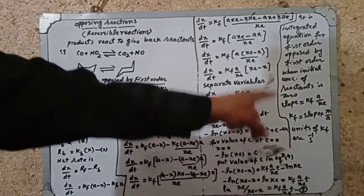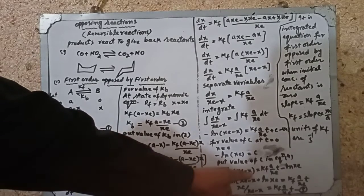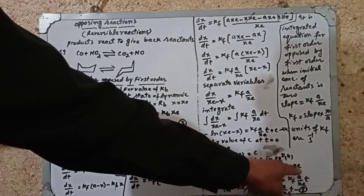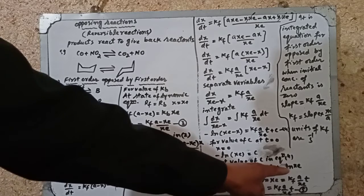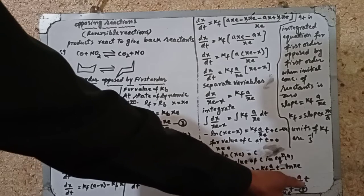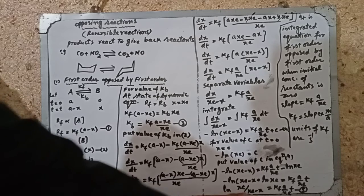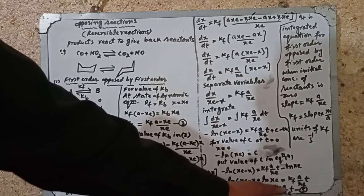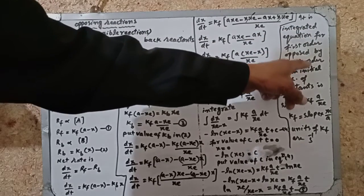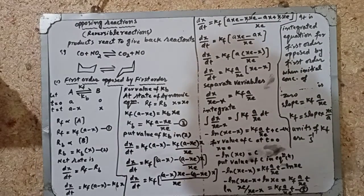Substituting the value of c into the equation: minus ln(xe minus x) equals kf·a/xe·t minus ln(xe). Rearranging, bringing minus ln(xe) to the left side gives plus ln(xe). Taking natural log as common: ln(xe / (xe minus x)) equals kf·a/xe·t. This is the integrated rate equation for first order opposed by first order, when the initial concentration of product is zero.